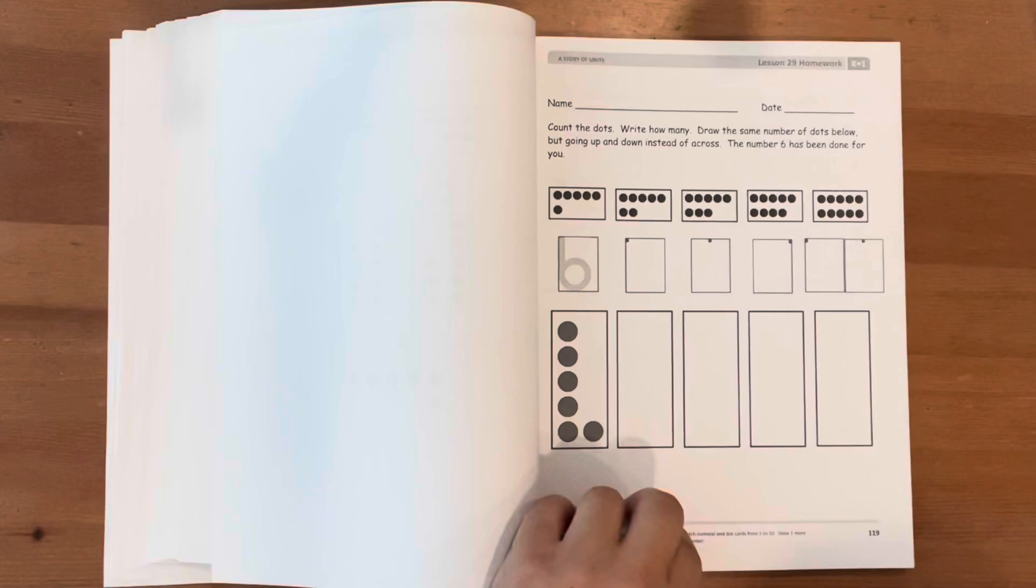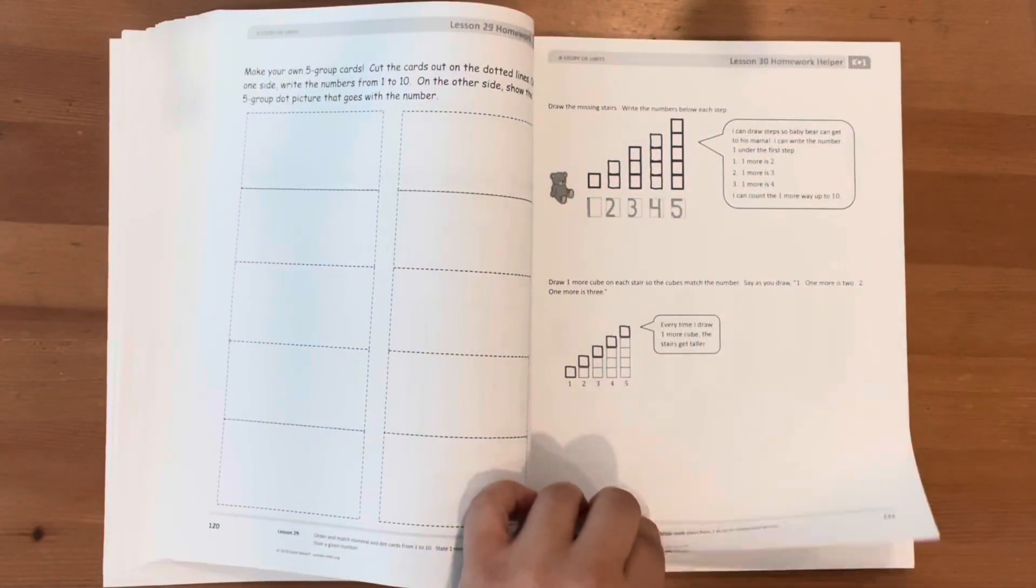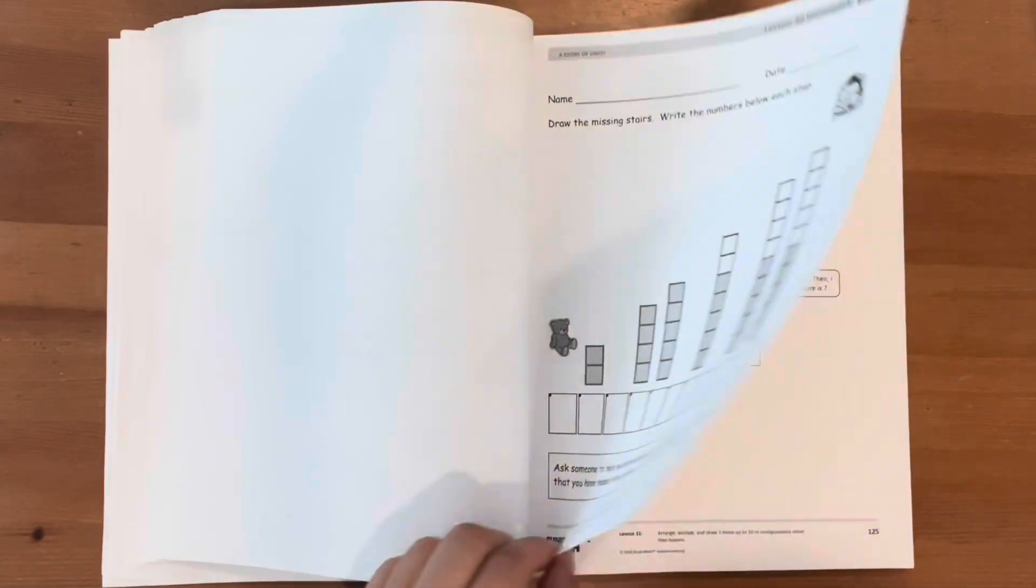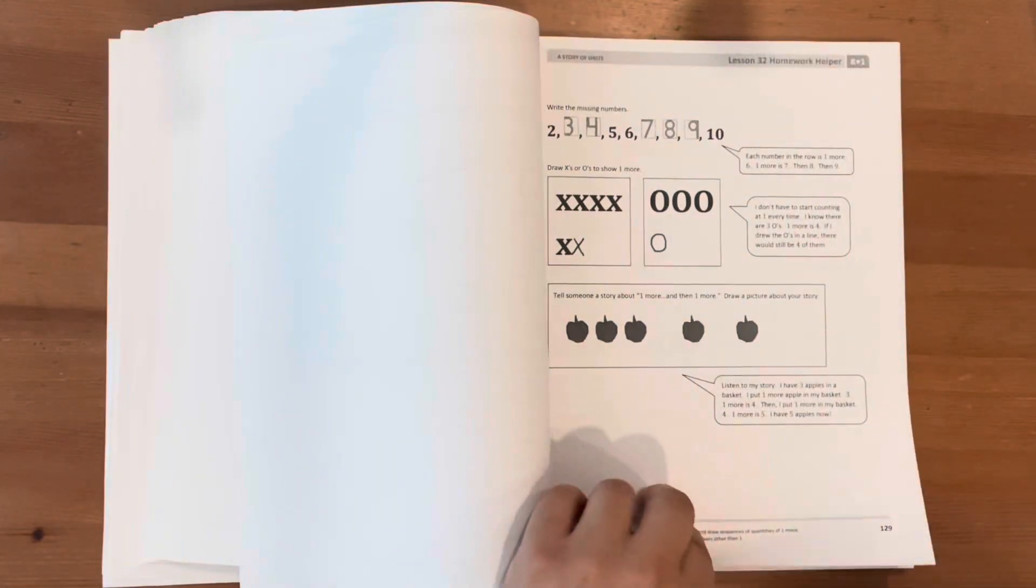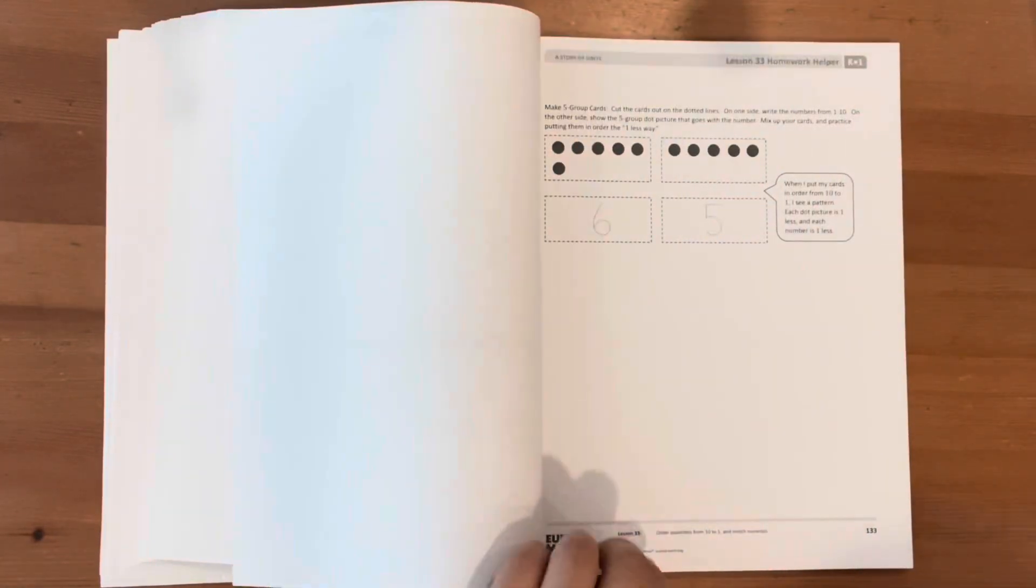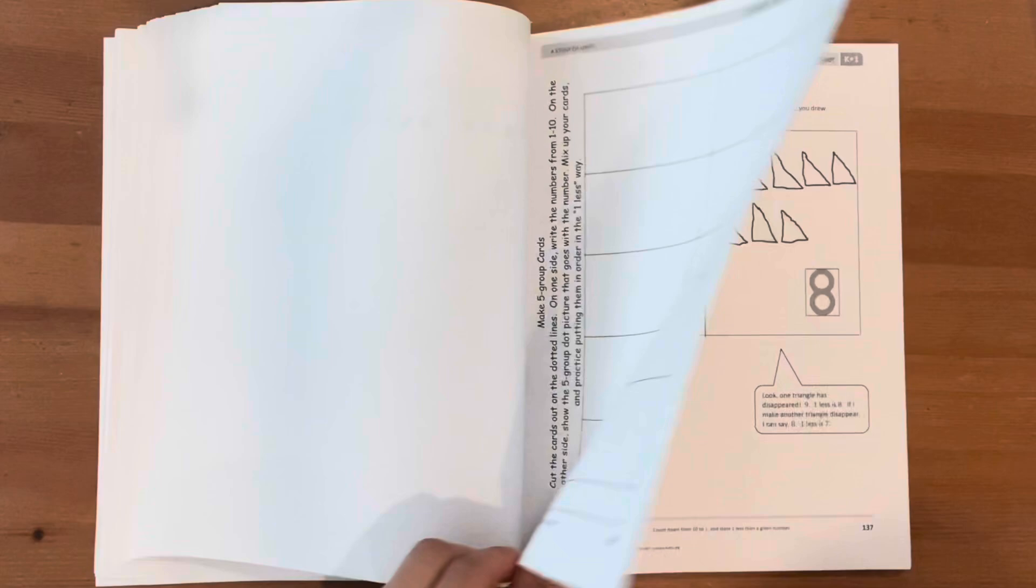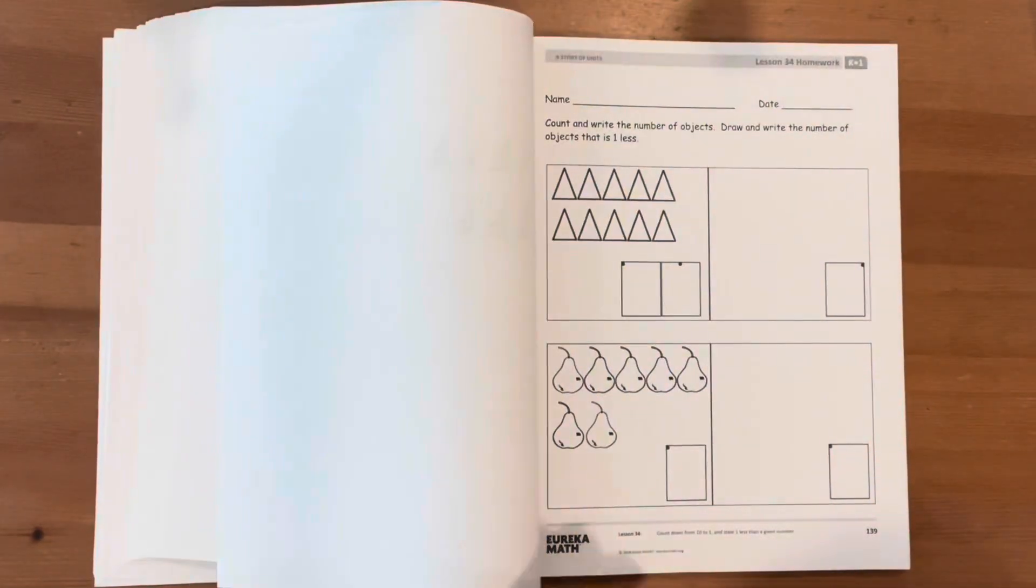eBay also has many cheaper options, and I always prefer to check eBay before buying any curriculum. You can also find digital lessons and more detailed explanations for each lesson on YouTube.